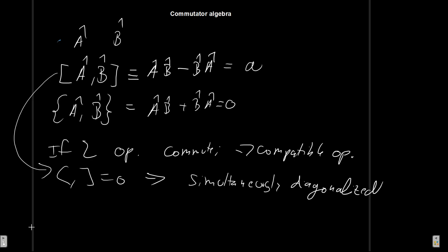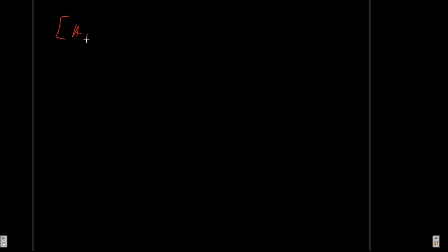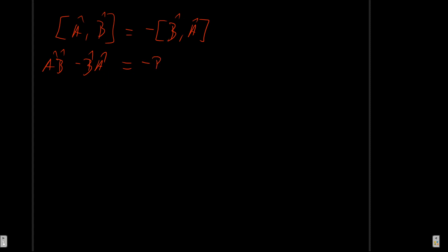A first important property is that any operator commutes with itself: the commutator of an operator with itself is always zero, which obviously makes sense. Another important property is that [A, B] equals minus [B, A]. We can see this clearly from the definition: [A, B] is AB minus BA, and minus [B, A] is minus BA plus AB, which is exactly the same.